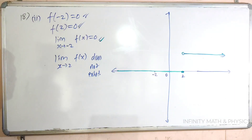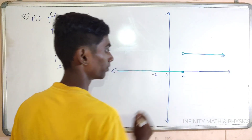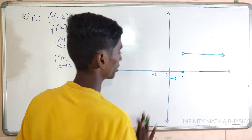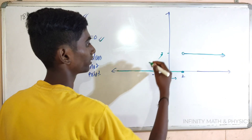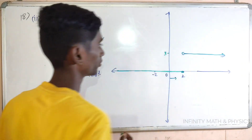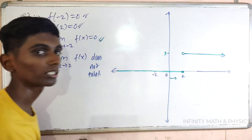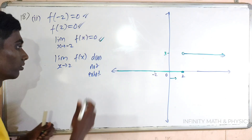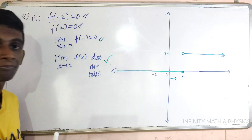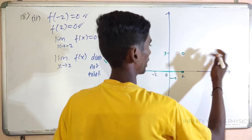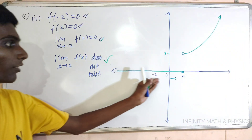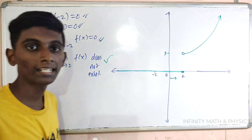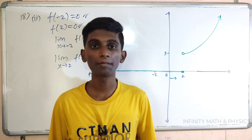This is true. Next: limit when x tends to 2, f of x. If you look at the left side and right side — if x tends to 2 minus and 2 plus, they are not equal. So this condition fails. Next time we will see the next video. If you enjoyed this video, like, share and subscribe. Thank you very much.